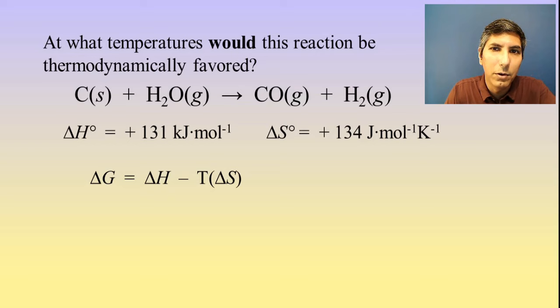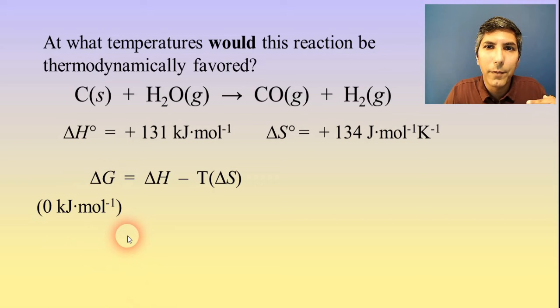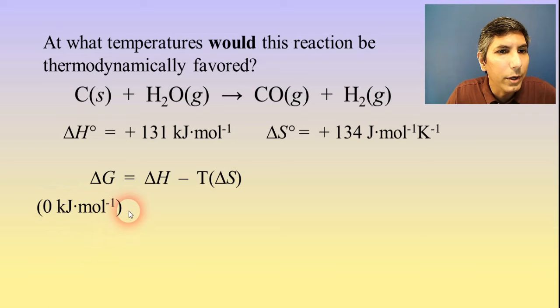that means that the delta G is going to stop being positive. So it's going to go from positive to negative territory. And the boundary between positive and negative is zero. So I'm going to plug in a zero for my delta G in order to determine the threshold temperature at which we go from being not thermodynamically favored to thermodynamically favored. So that's why I'm plugging in a zero here.